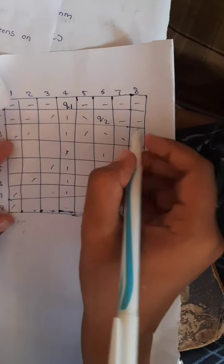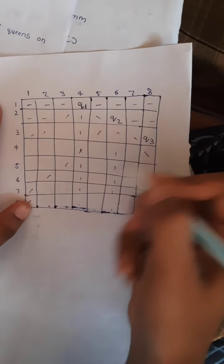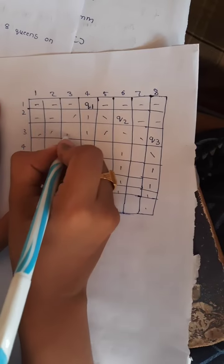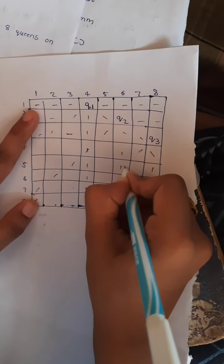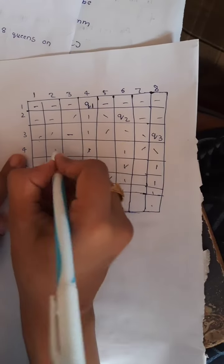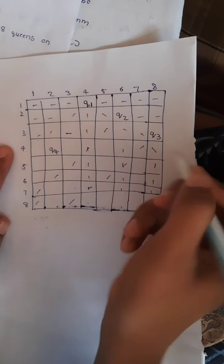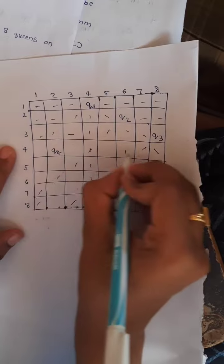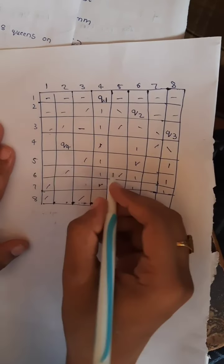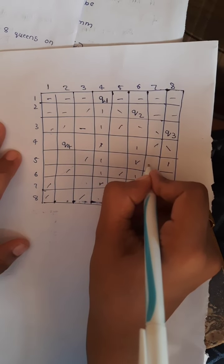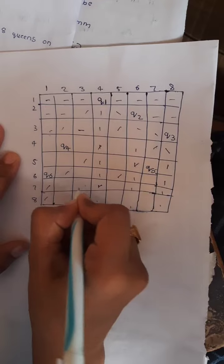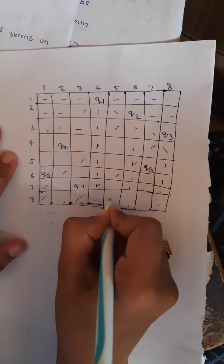Now I am going to place Queen 3 here, and not placing other Queens in the diagonal-wise and column boxes. Queen 4 likewise — I am placing all the Queens, and Queen 4 here. We are not going to place any Queen in the same row or same column. Queen 5 I am placing here, Queen 6 I am placing here, Queen 7 I am placing here, Queen 8 I am placing here.